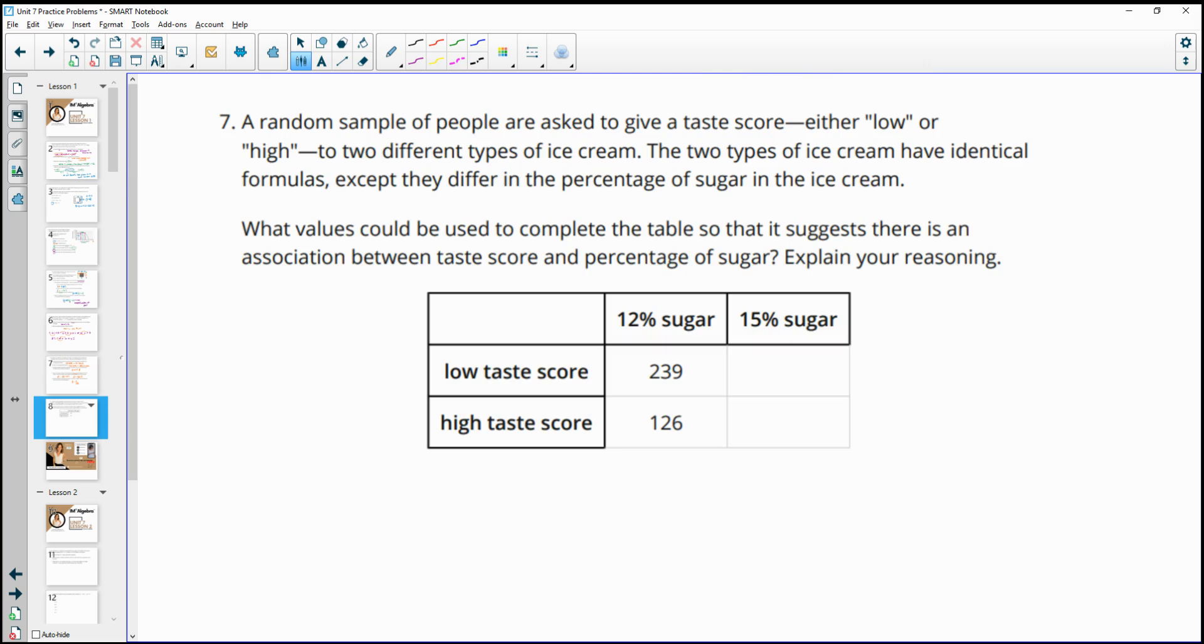Number seven, a random sample of people are asked to give a taste score either low or high to two different types of ice cream. The two types of ice cream have identical formulas except that they differ in the percentage of sugar in the ice cream. What values could be completed so that it suggests that there is an association between the taste score and percentage of sugar? Explain your reasoning. So if there is an association, then these numbers need to significantly change based on how much sugar there is. The idea here is probably that people like the ice cream more when there's more sugar, right? So the more sugar there is, the better it tastes.